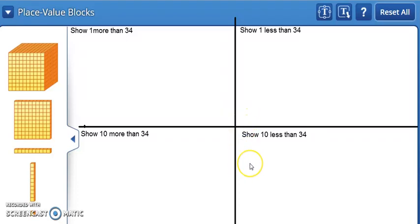Generate a number that is greater than or less than a given number up to 120. Use relationships to determine that a number is 10 more or 10 less than a given number up to 120.